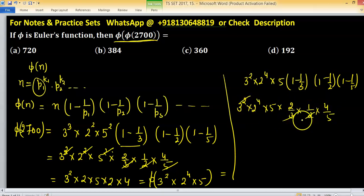1 power less for each and 5 cancel out by 5. We have 3 into 2 raised to the power 3 into 2 into 4. This value equals to 3 into 2 raised to the power 6 because 1 power here and 2 power here. So 2 times 3 is 6.